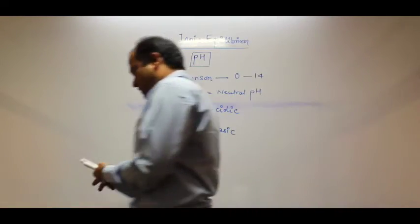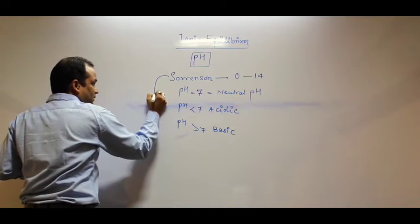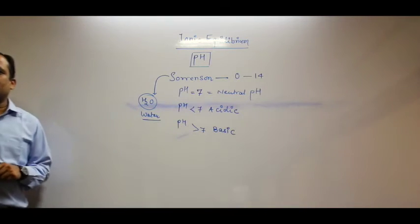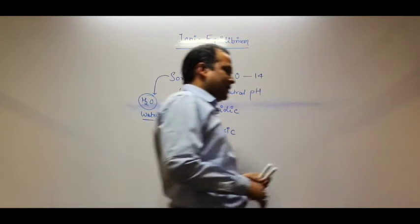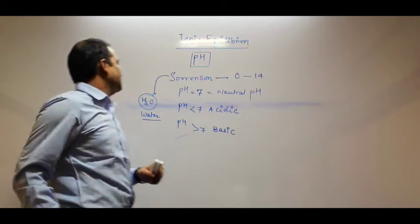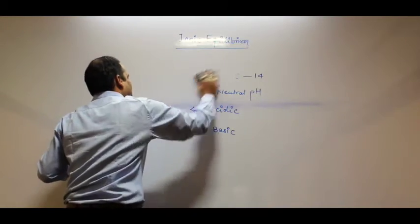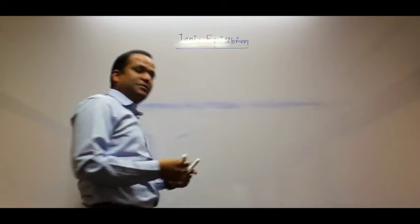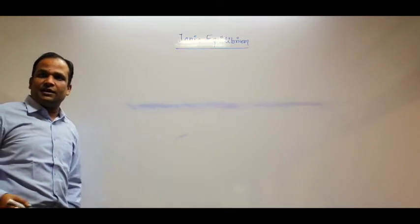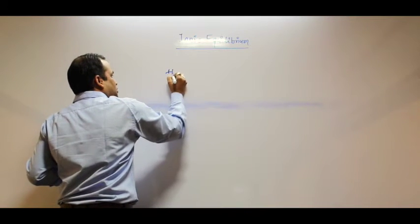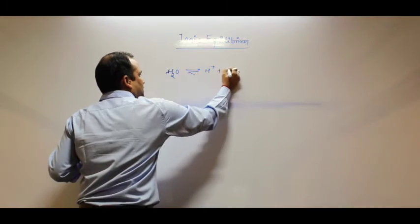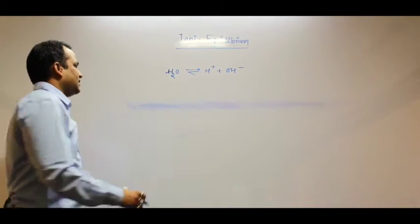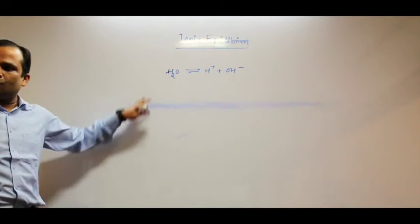What is the basis of pH? How do we find out from water? When H2O undergoes dissociation, it forms H+ and OH-. Generally, we write H3O+ because H+ does not exist freely. Suppose H2O is converted into H+ and OH-.